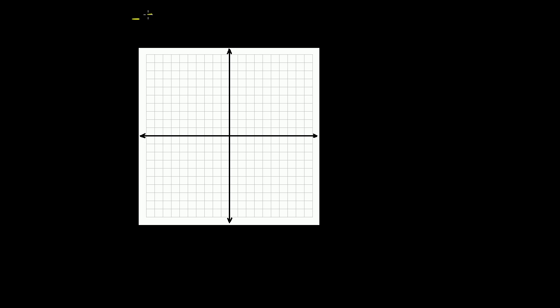We have the equation negative 5x plus 4y is equal to 20. And we're told to find the intercepts of this equation. So we have to find the intercepts and then use the intercepts to graph this line on the coordinate plane. So then graph the line.